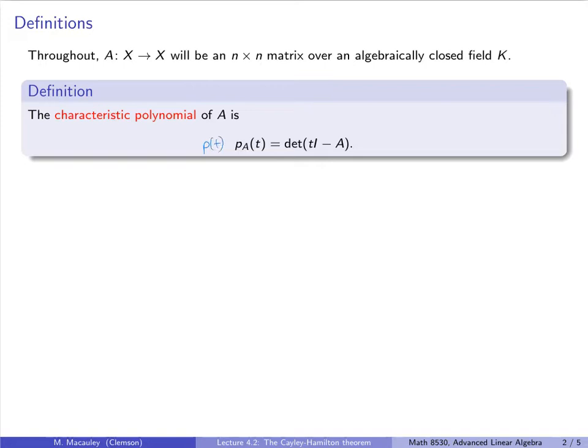A lot of books use different variables and different conventions. In your undergraduate class, you likely saw P of lambda, with lambda being the variable. I'm going to use a different variable: lambda will be the root or the eigenvalues, but I don't want to call that the variable as well. You might also see P of X or P of S in other books.